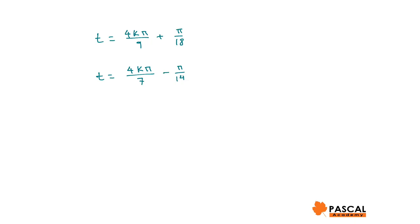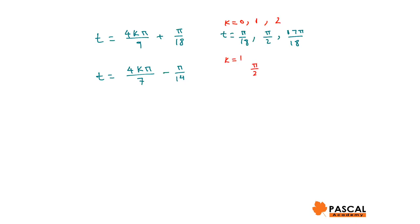Assuming k equals 0, 1, or 2, from the first equation we get t equals π/18, π/2, or 17π/18. From the second equation, the only admissible solution between 0 and π is when k equals 1, giving t equals π/2. Therefore, t is either π/18, π/2, or 17π/18.